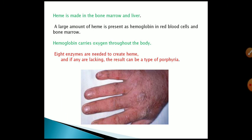Heme is made in the bone marrow and liver. Large amounts of heme are present in hemoglobin in red blood cells and bone marrow. Hemoglobin carries oxygen throughout the body. Eight enzymes are needed to create heme; if any are lacking, the result may be porphyria.